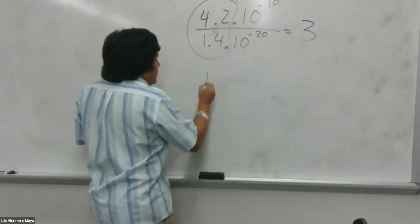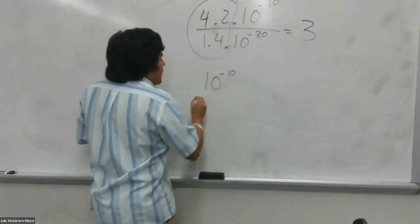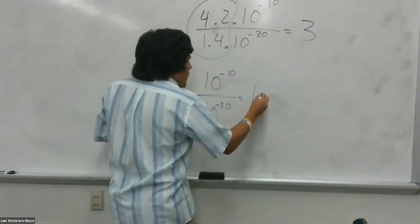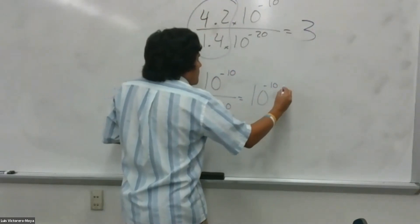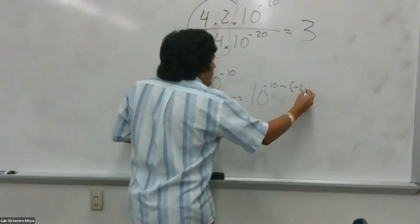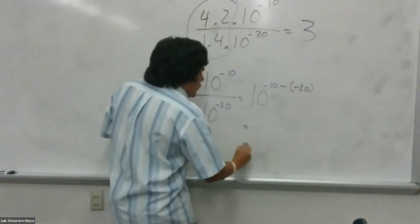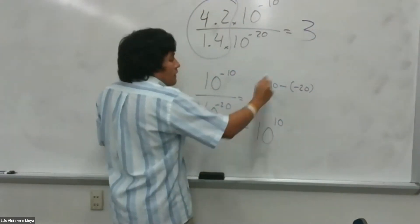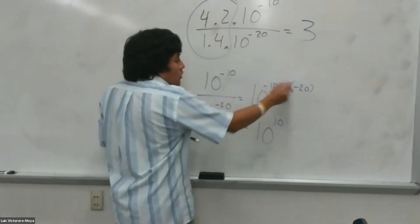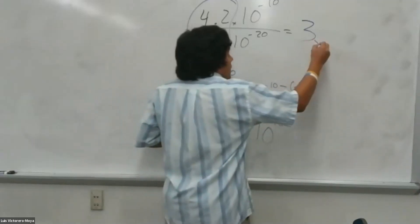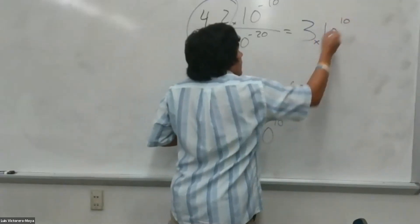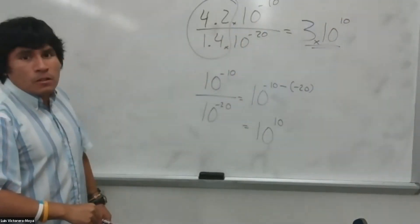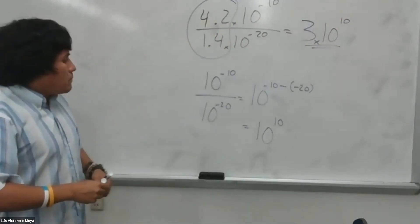How do you subtract here? So 10 to the negative 10 divided by 10 to the negative 20 is 10 to the negative 10 minus minus 20. That gives you effectively 10 to the 10. Negative by negative is a positive. So 20 minus 10, 10. So here, 3 times 10 to the 10. That would be the answer of that. Make sure that you review that.